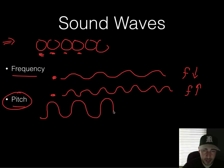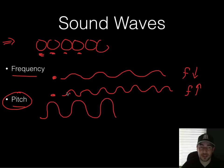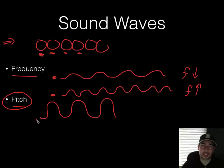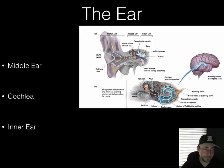Loudness is just how tall that wave would be — so a very tall wave would be a loud sound, and a shorter wave would be a lower volume. That's the amplitude of the wave and how it registers on your ear.